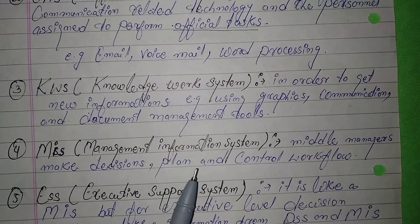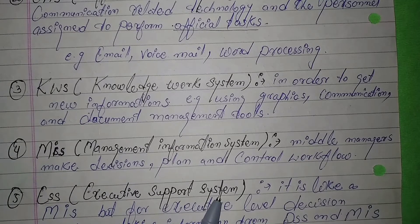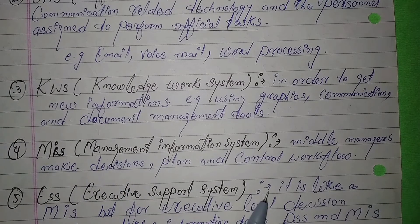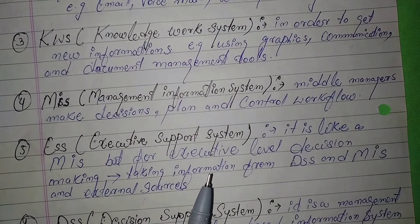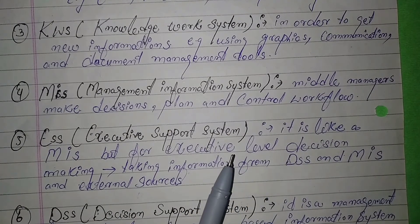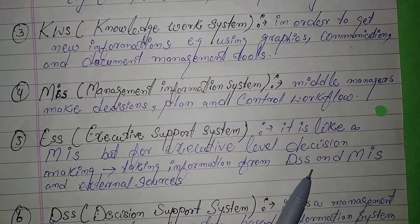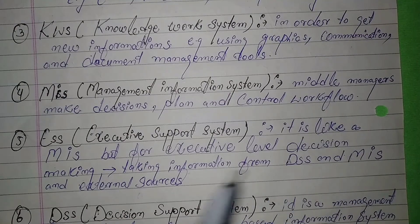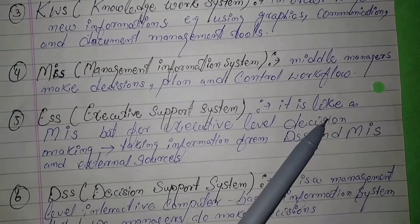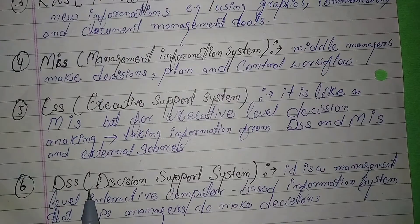The fifth is ESS, that is Executive Support System. Similar to MIS but for executive level, it supports higher management in taking decisions by taking information from DSS, MIS, and external sources.